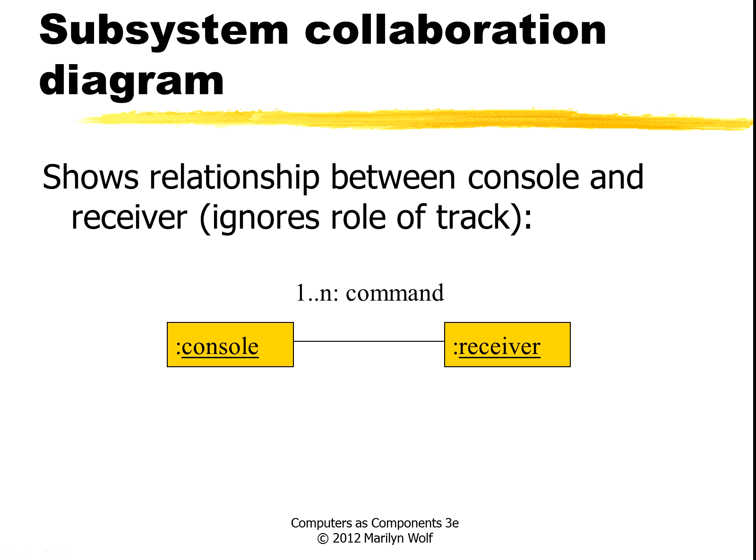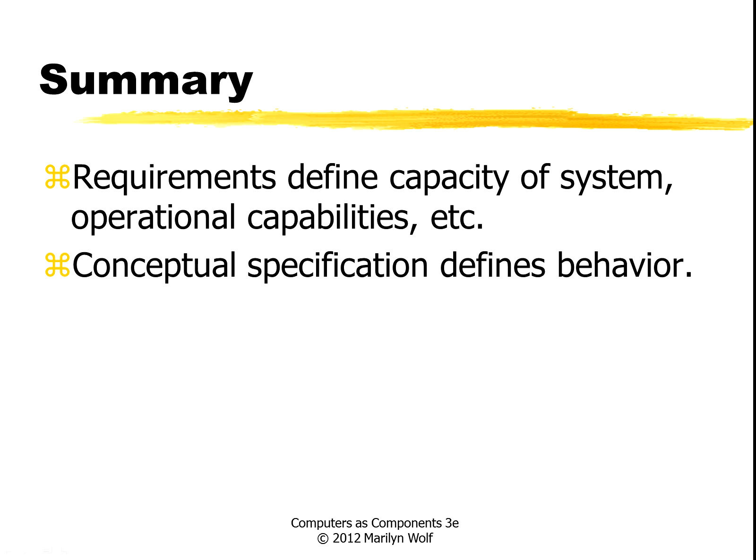This collaboration diagram just shows the relationship between the console and the receiver. We have a relationship between a console and a receiver, and we can send a bunch of commands. So in summary, requirements define the basic capacity of the system among other things, and our conceptual specification helps us rough out the behavior before we get into too much detail.